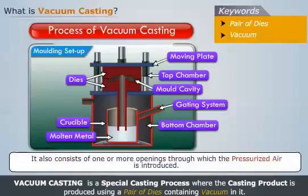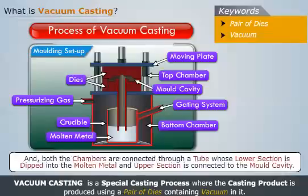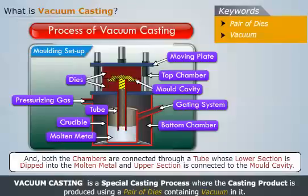It also consists of one or more openings through which the pressurized air is introduced, and both the chambers are connected through a tube whose lower section is dipped into the molten metal and upper section is connected to the mold cavity.